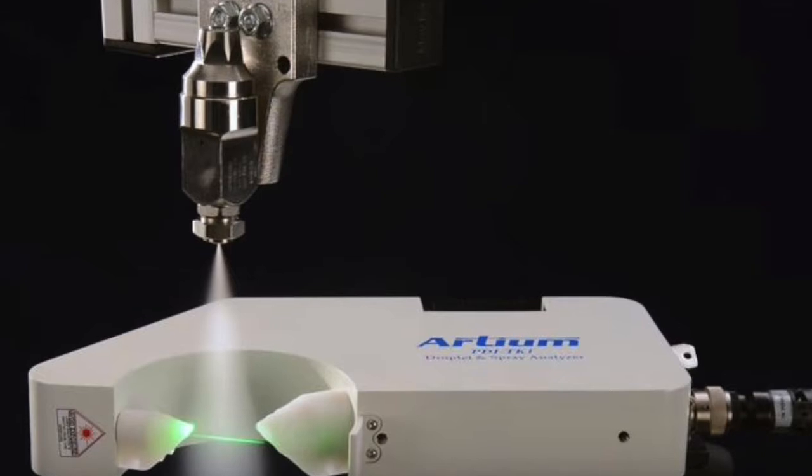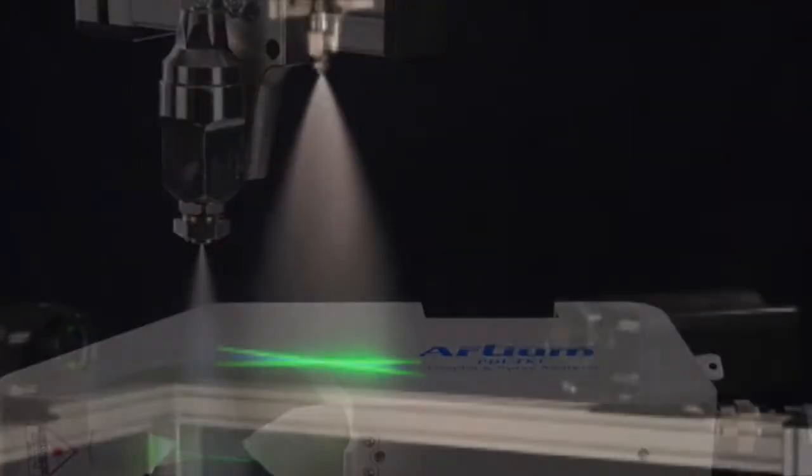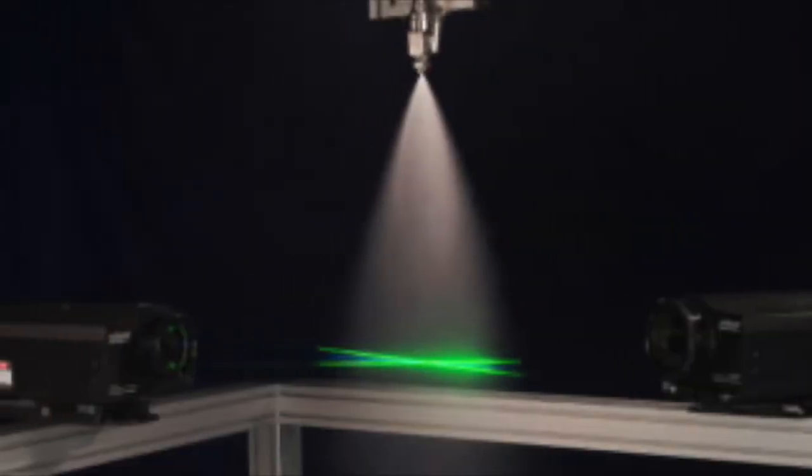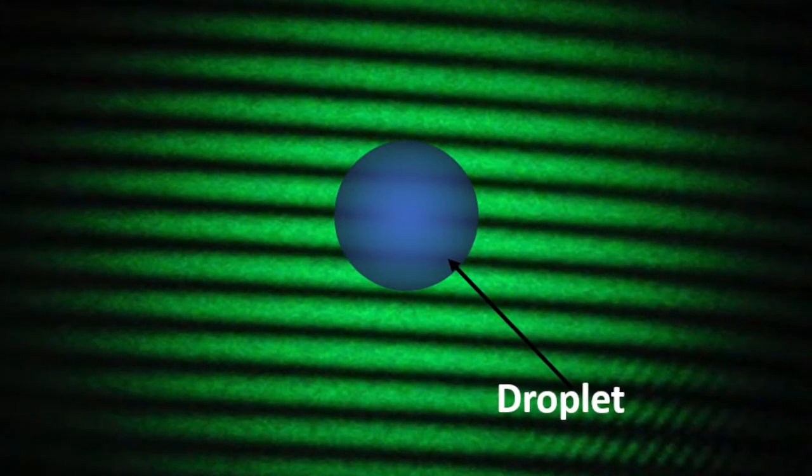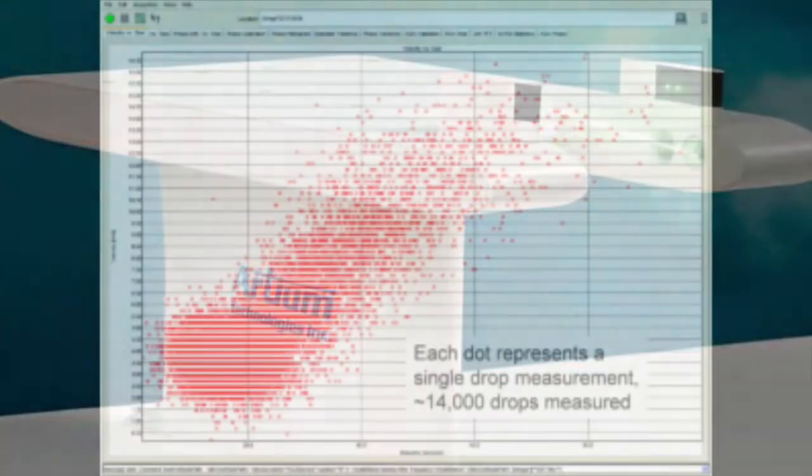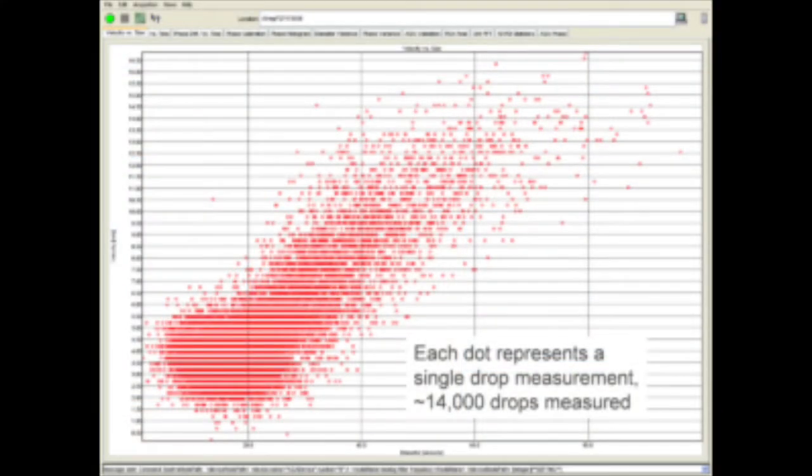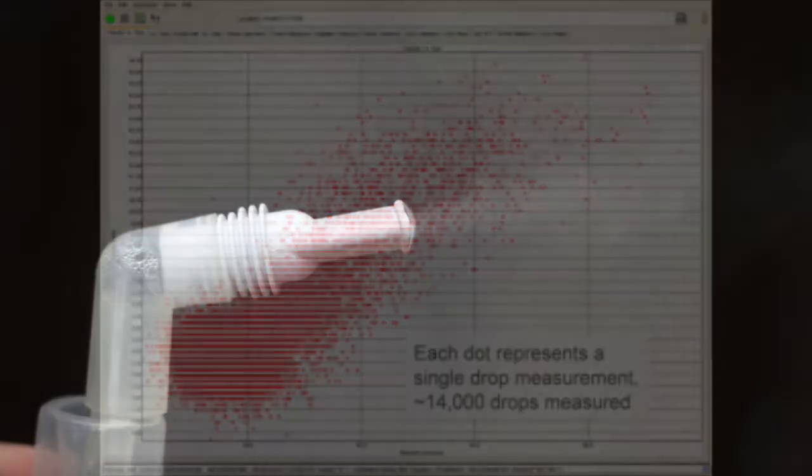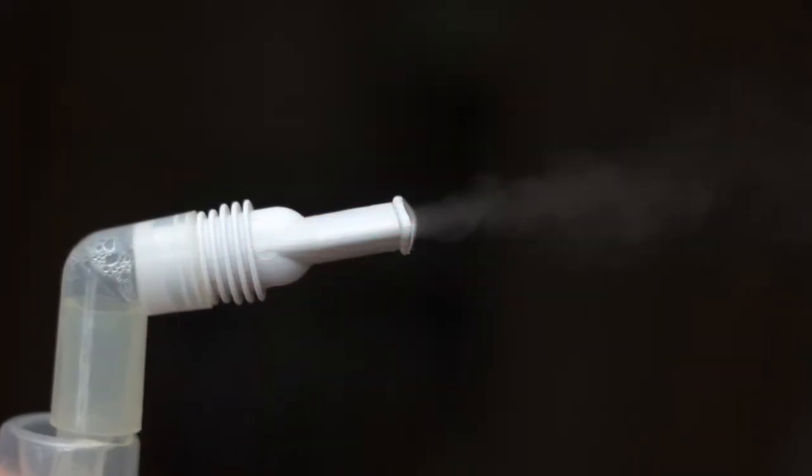PDI is a system that you use whenever you need to measure the diameter and velocity of round particles. And it gives you a very accurate measurement, the best state-of-the-art method in the market.